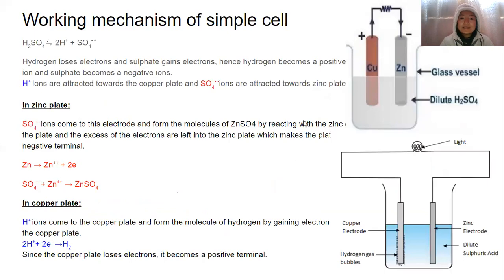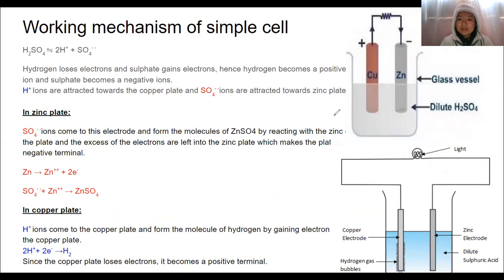All right. The electrolyte we have for this simple cell here is sulfuric acid. The molecular formula for sulfuric acid is H2SO4. The acid dissociates into its constituent ions, hydrogen ion and sulfate ion. Hydrogen ion is positive radical and sulfate ion is negative radical. Hydrogen loses its electrons while sulfate ion accepts the electrons and becomes negative.